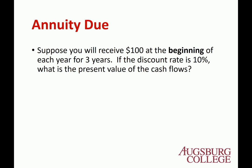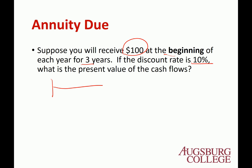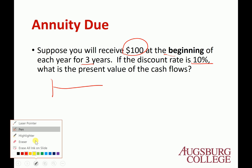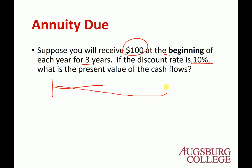What about annuity due? Again receive $100, but now at the beginning of each period instead of the end, for 3 years at a 10% discount rate. The timeline is slightly different. Let's continue to the next clip covering annuity due.